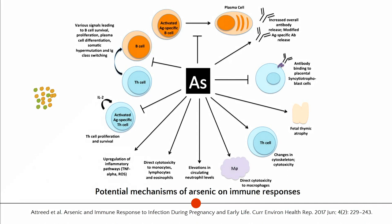There have been some lovely experimental studies. This figure from a recent article by Atreid et al. shows potential mechanisms of arsenic on the immune response. Those direct arrows show that experimental models at high doses have direct effects on cytotoxicity of monocytes, lymphocytes, and eosinophils. It elevates circulating neutrophil levels, affects macrophages, and changes the cytoskeleton of T cells. It also has many indirect mechanisms — it's known to inhibit B cell, T cell, and antibody functioning.